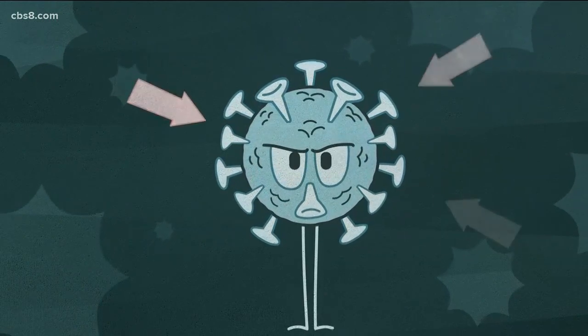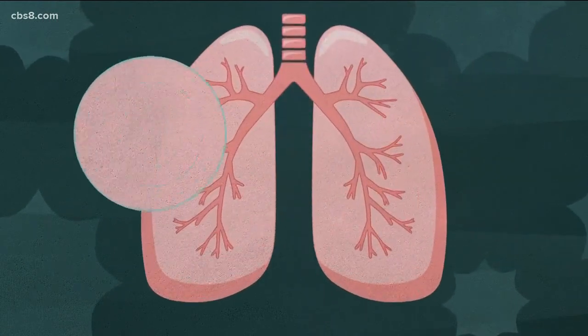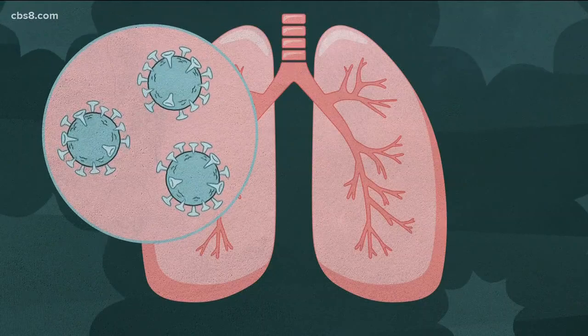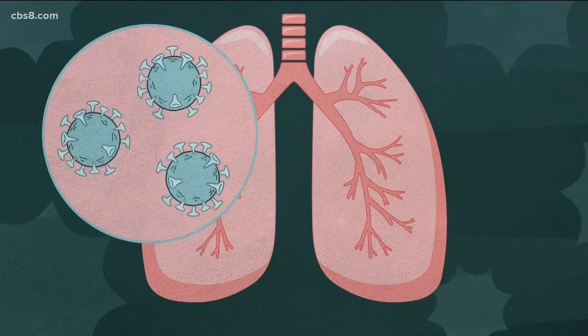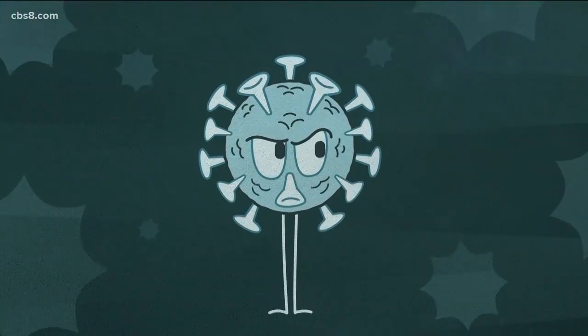But how does it work on the coronavirus, which is named after these crown-like spikes? These allow the virus to attach to your lung cells, causing major damage, but the outer layer of the virus has a weakness.